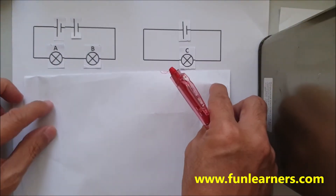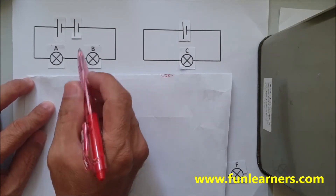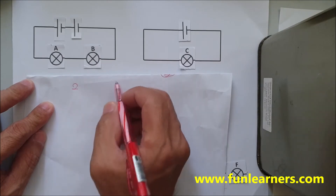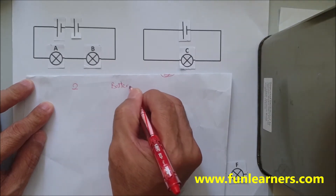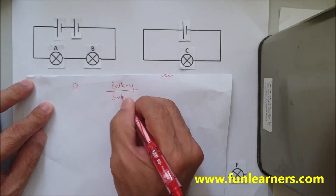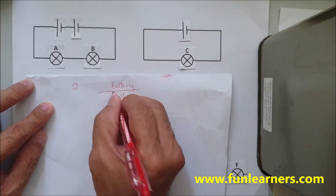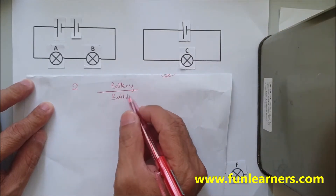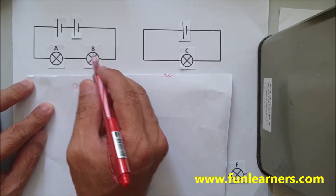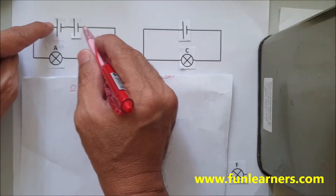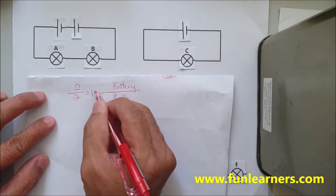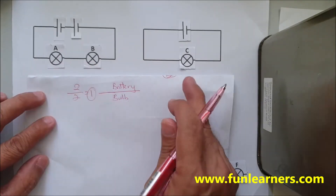In example two, we have two batteries in series — we add them up. We always use: number of batteries divided by number of bulbs to tell us the brightness. There are two batteries here, and within these two batteries there are two light bulbs A and B, so two divided by two — the brightness is one for both.